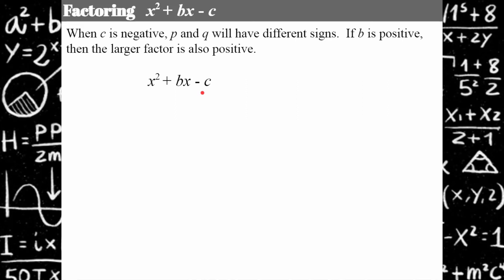If they're both negative, c will also be positive. So we know that in order for c to be negative, we have to have one positive factor and one negative factor. If this is going to be positive, we know that the larger factor has to be positive. With trial and error, you'll start to catch on to the puzzle nature of this activity. It's either going to be x plus p multiplied by x minus q, or x subtract p multiplied by x plus q.